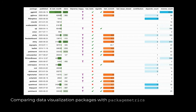Here is some output for comparing different data visualization packages using Package Metrics. You can see, for example, when each was published, its number of downloads last month, whether it has a vignette, and its number of reverse dependencies, among other things.